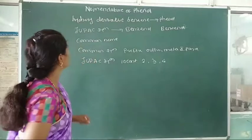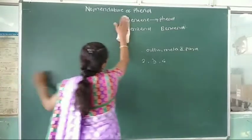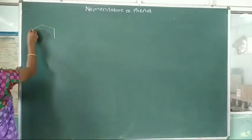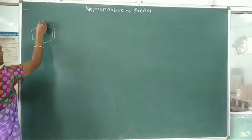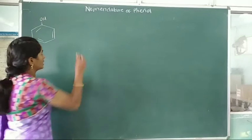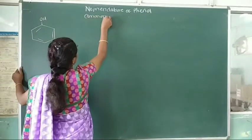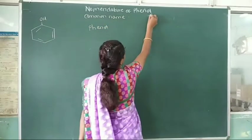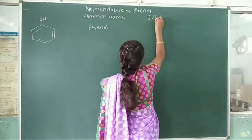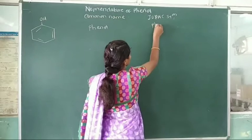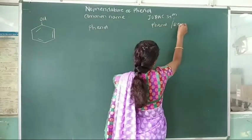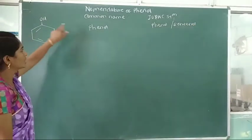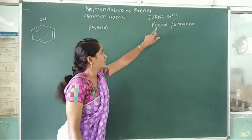Now we will see some examples of phenol with their common name and IUPAC name. The first example is simply phenol — a hydroxy group directly attached to a carbon atom in benzene. In the common system, it is called phenol, and in the IUPAC system it is also called phenol or benzenol.